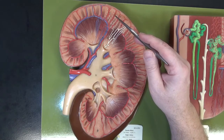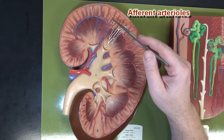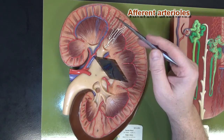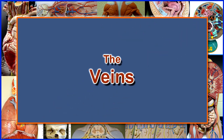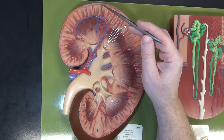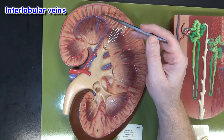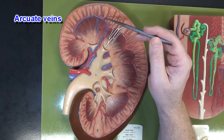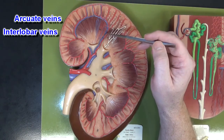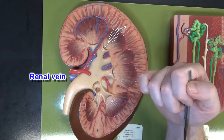Branching off the interlobular arteries, we can see tiny afferent arterioles going into these glomeruli here. The veins drain the opposite of the arteries: we have the interlobular veins or cortical radiate veins, the arcuate veins, the interlobar veins, and segmental veins leading into the renal vein.